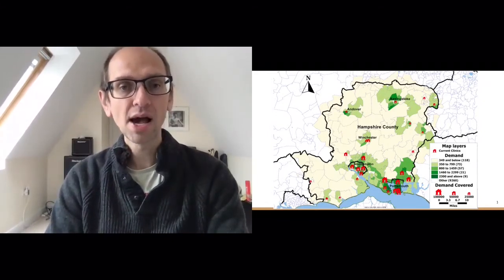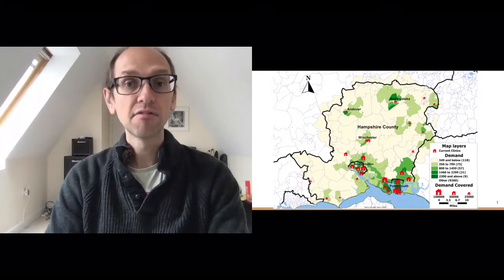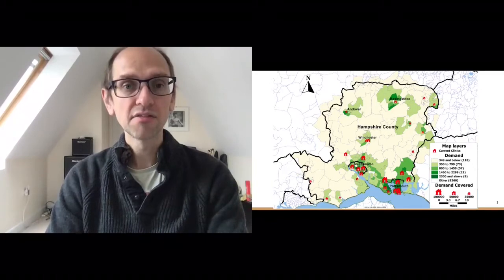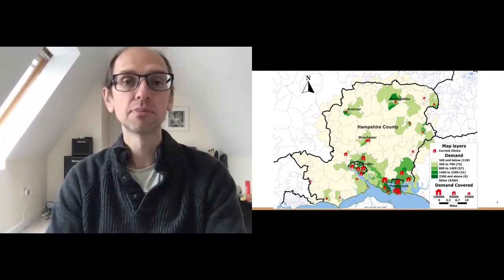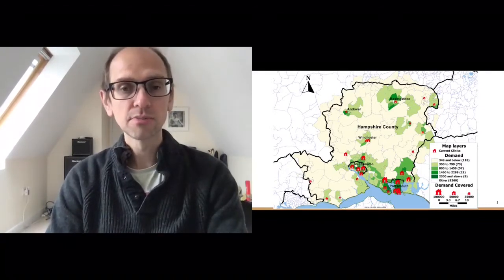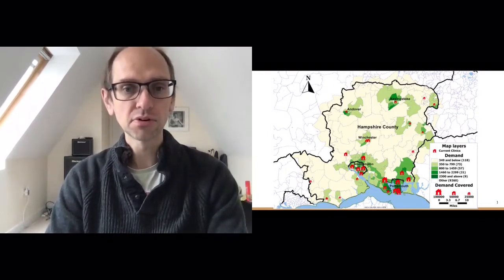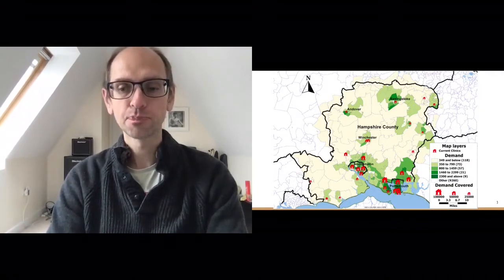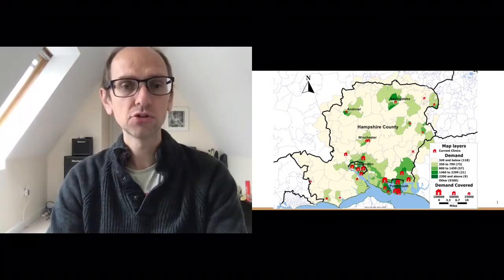The public health teams and the provider felt they had too many facilities, and the type of care people received when they walked into a sexual health clinic varied significantly across Hampshire. There was also an issue with some clinics being underutilised. They were keen to think about consolidating to a smaller number of facilities — how many should they choose and where should they be located. It was a classic optimisation problem with too many locations to enumerate all possible solutions.